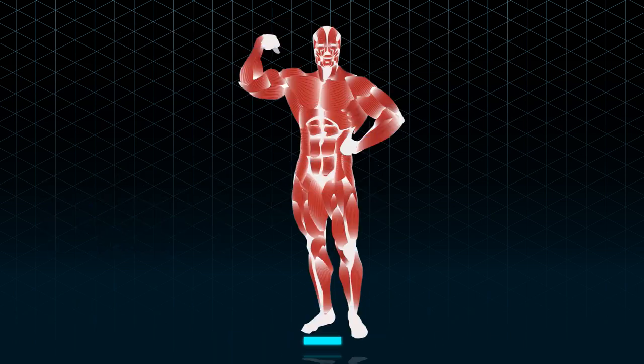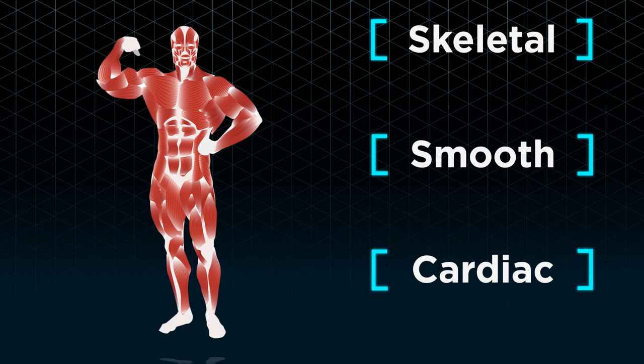In conclusion, there are three types of muscles found in our body, all of which have specific structures and functions.